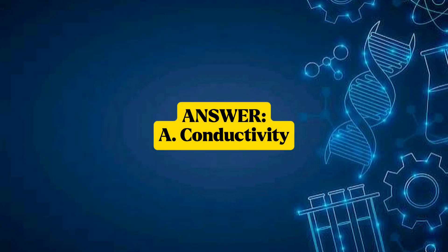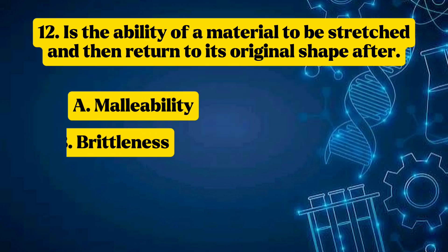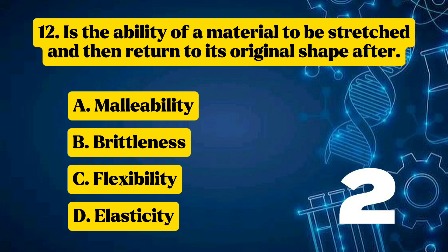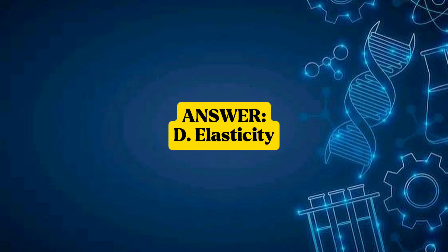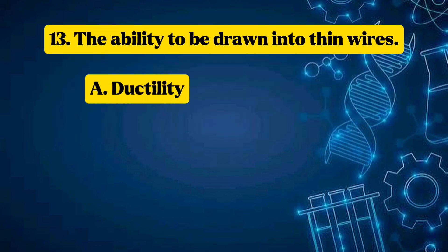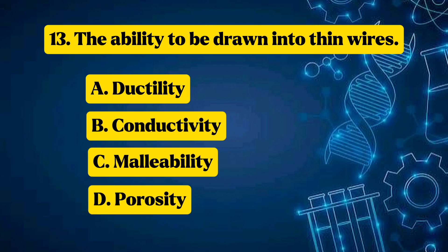Question 12: It is the ability of a material to be stretched and then return to its original shape. Options: A — malleability, B — brittleness, C — flexibility, D — elasticity. Answer: D — Elasticity. Question 13: The ability to be drawn into thin wires. Options: A — ductility, B — conductivity, C — malleability, D — porosity. Answer: A — Ductility.